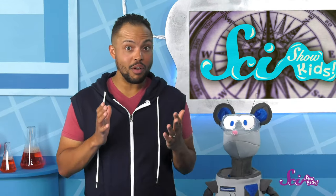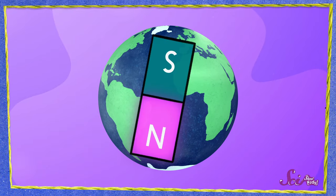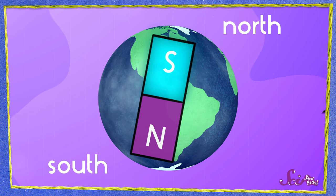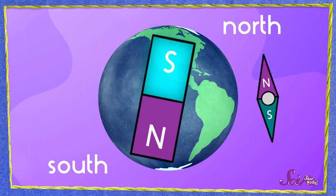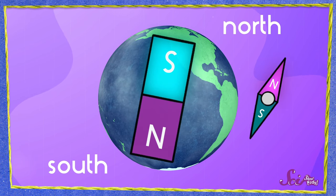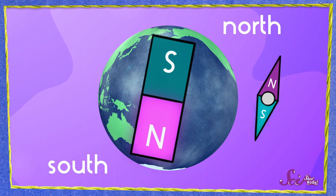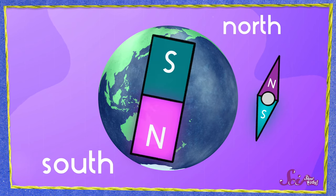You know, Squeaks, you're absolutely right. It seems like the north pole of the Earth should repel the north pole of our compass needle. But here's the weird thing. The Earth's north magnetic pole is actually in the south, and its south magnetic pole is in the north. So the Earth's south magnetic pole is pulling the north pole of our needle to the north, and the Earth's north magnetic pole is pulling the south pole of our needle to the south. Which is weird and confusing, I know! But hey, I didn't name these things.